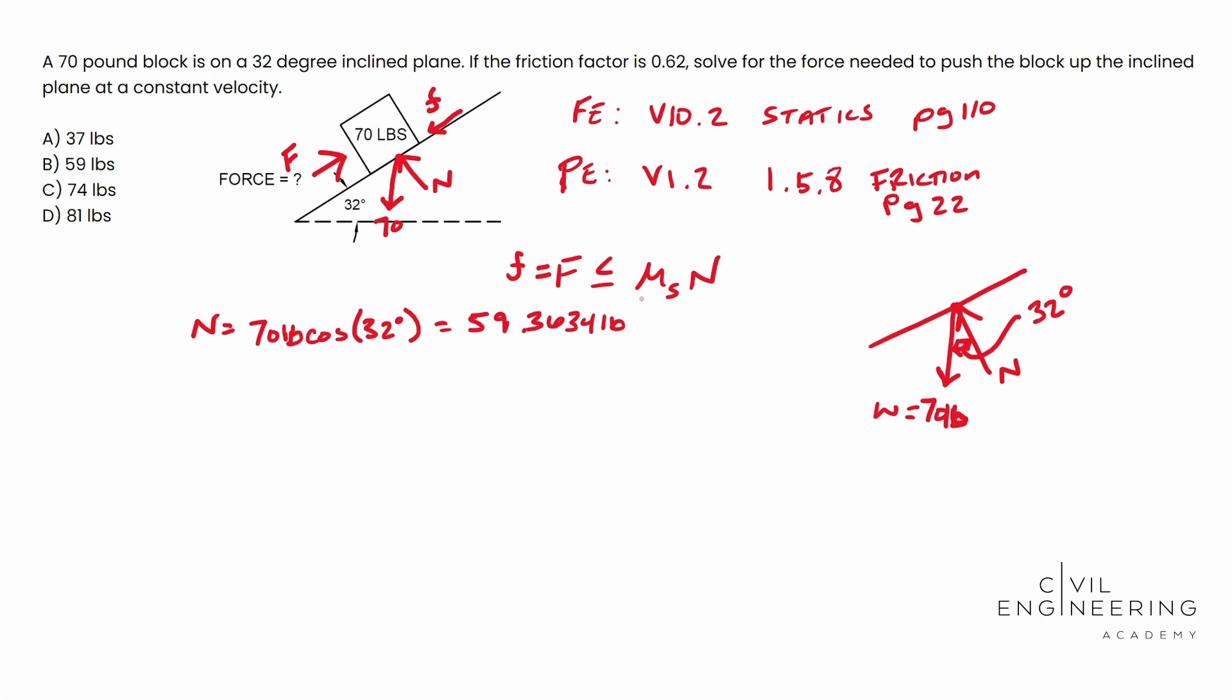What we need to do is plug that into our friction formula. The force of friction is less than or equal to mu, which is 0.62, that's given to us in the problem. We need to multiply that by the normal force that we just solved for, 59.3634 pounds. When we solve for this, the friction on this block is 36.8053. Notice they give us 37 pounds, but that's not necessarily the force we need to apply to this block. We also need to include the weight of the block.